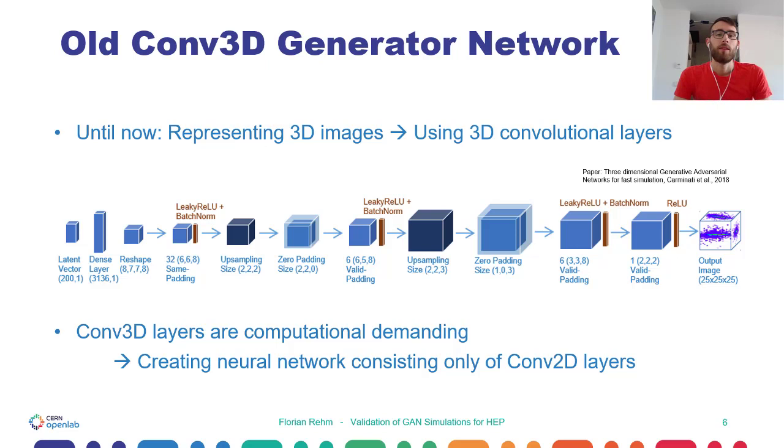As we have 3D images, the obvious first step was to use 3D convolutional layers to represent them. Here you can see the previous architecture, but I don't want to go into the details of the architecture. Just to mention, the input vector to our neural network is a latent vector with a size 200, and the output is our three-dimensional shower image with the dimensions 25 by 25 by 25.